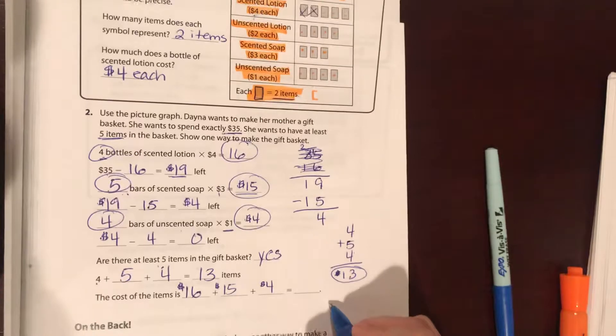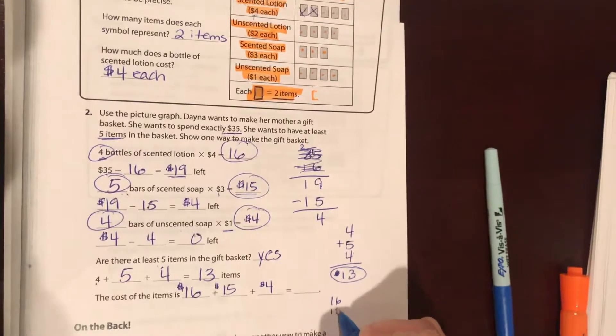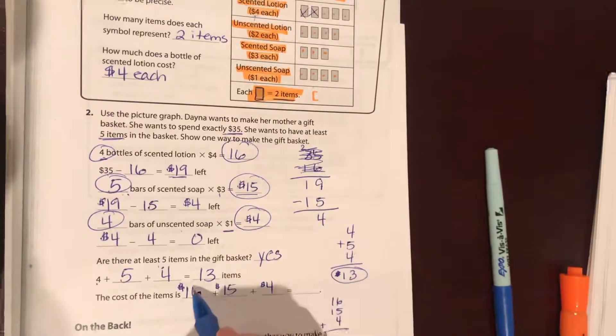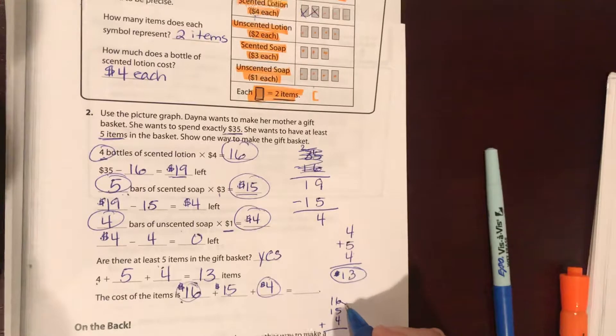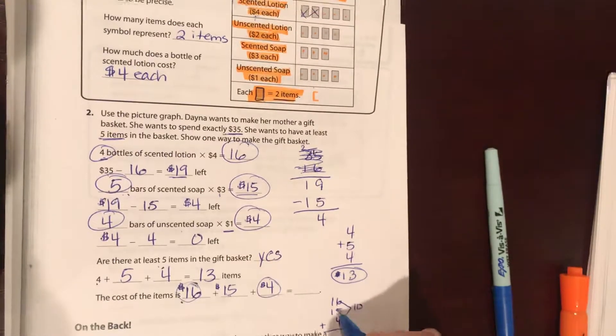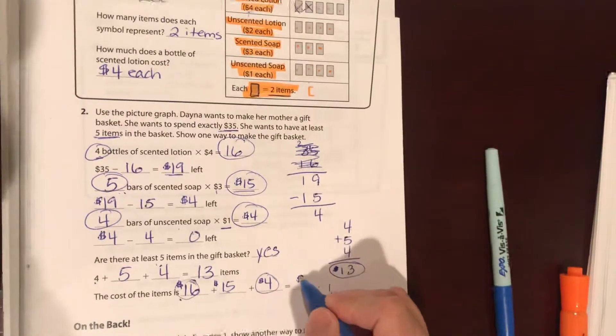Let's double check that math. I know that sixteen plus four is twenty plus the fifteen equals thirty-five, but we can do it this way. Six plus four is ten, ten plus five is fifteen. Thirty-five dollars, check check check. We spent thirty-five dollars, we have thirteen items in there, it's a beautiful basket.